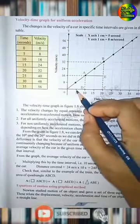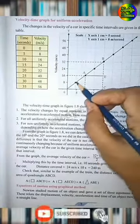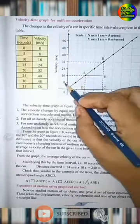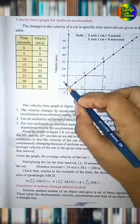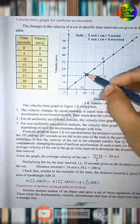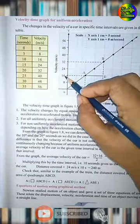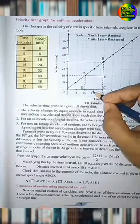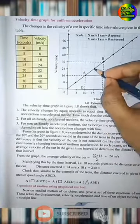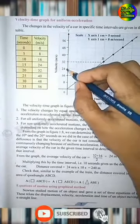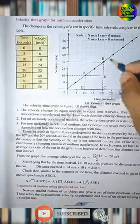You can see the initial velocity of a car is 0. After 5 seconds, the velocity changes to 8 meter per second. After 10 seconds, the velocity changes to 16 meter per second. After 15 seconds, the velocity changes to 24 meter per second and so on.